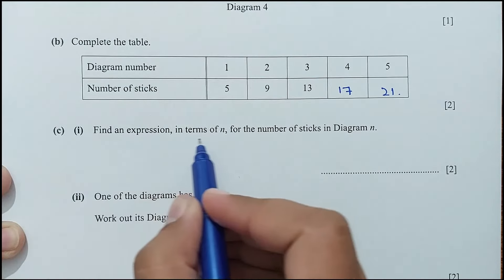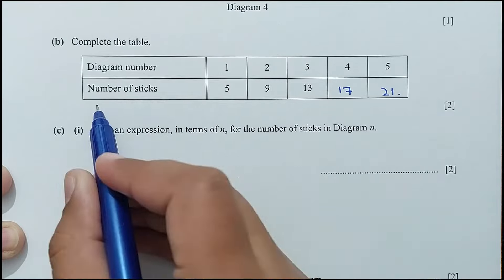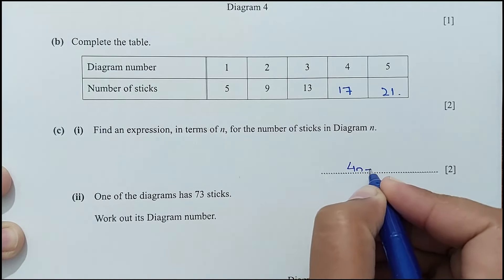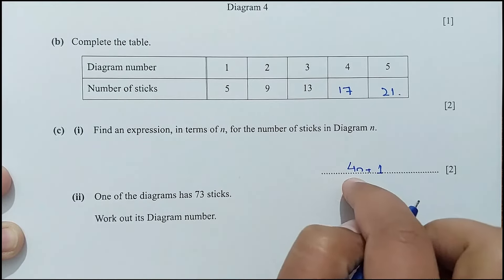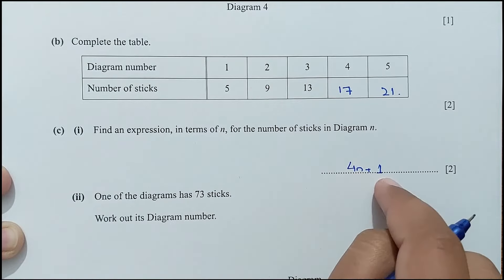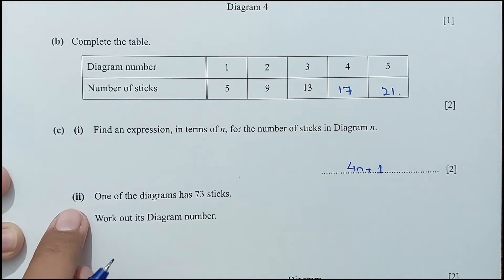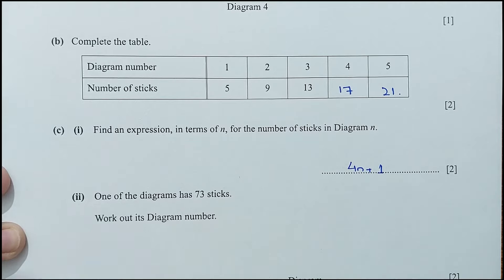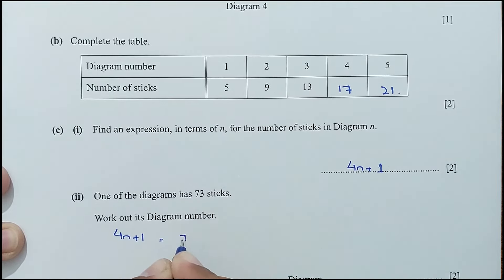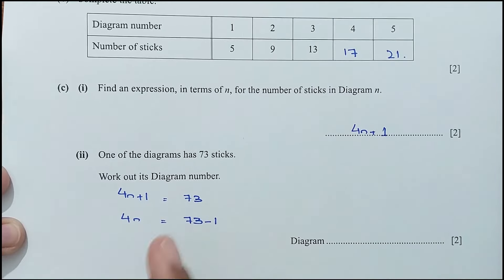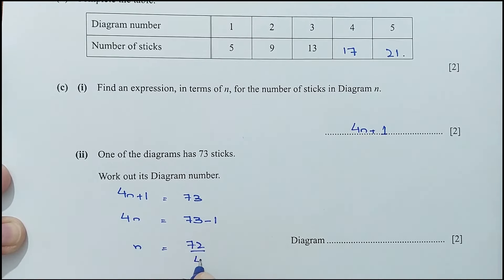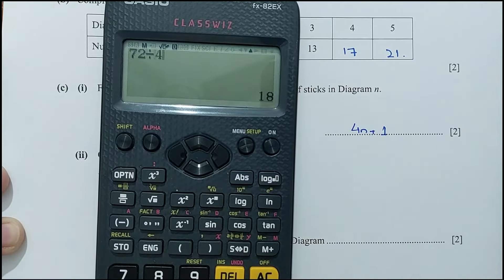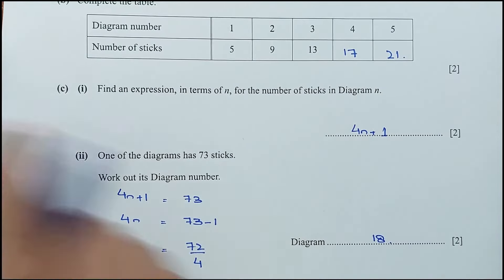Part C, part 1: find an expression for the number of sticks in diagram n. The common difference is 4, so the expression is 4n + 1. Checking: 4(1) + 1 = 5, 4(2) + 1 = 9, 4(3) + 1 = 13. Part 2: one diagram has 73 sticks. Setting 4n + 1 = 73 gives 4n = 72, so n = 18. Diagram 18 has 73 sticks.